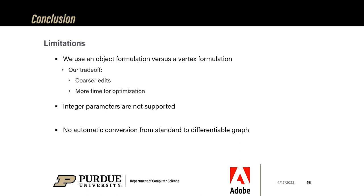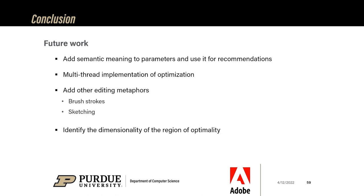There is also no automatic procedure to convert a normal graph to a differential graph. As future work, we could add semantic meaning to parameters — like theta is an angle in degrees, or width is a length in meters — to improve recommendations. To further improve speed, we could implement a multi-threaded optimizer. We did not experiment with other editing metaphors beyond Blender 3D gizmos. Finally, our clustering and ordering of samples works best only if the region of optimality is a 1D manifold; using a non-linear PCA would allow us to determine its dimensionality and provide better UX for choosing a solution.